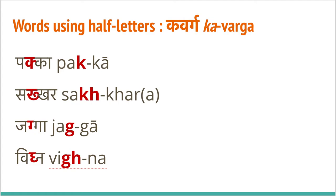We start with words having half letters. In the half letter videos you've also seen some of these words, and there I used a color scheme to make it clear what the half letter is and where it is pronounced. Here I will not separate the half letter alone, because it is not pronounced alone. I will put the half letters with the syllable they are pronounced with. The color scheme will help you identify where the half letter is, and the syllable will help you understand how it should be pronounced.